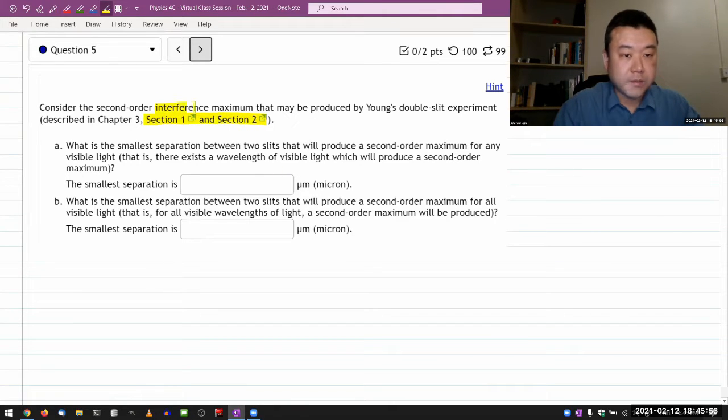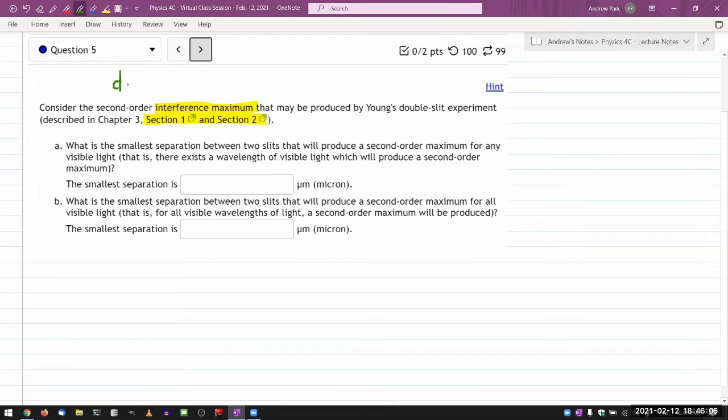We are looking for interference maximum, constructive interference, which means this condition applies: d being the double slit separation distance times the sine of the angle is equal to m times lambda. This is for constructive interference. And m is integer values - for double slit interference it starts from zero because the central maximum you can count as one of them. So zero, plus minus one, plus minus two and so on.